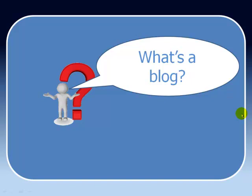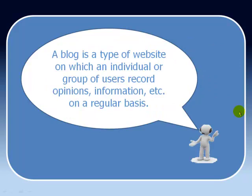So the first question is, what is a blog? Now a blog, if I look at Wikipedia, gives us this definition: a blog is a type of website in which an individual or group of users record opinions, information, etc. on a regular basis. Now on the World Wide Web there's over 110 million blogs, so lots of people out there blogging.